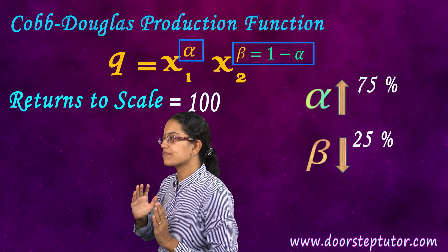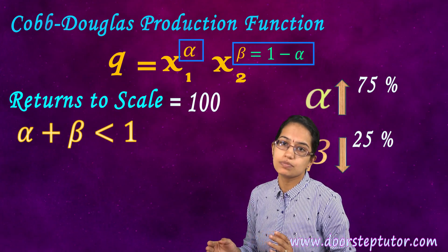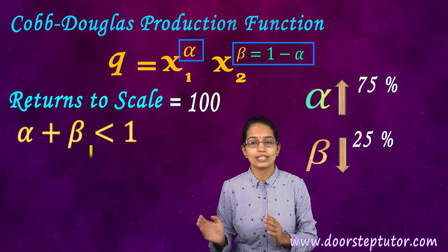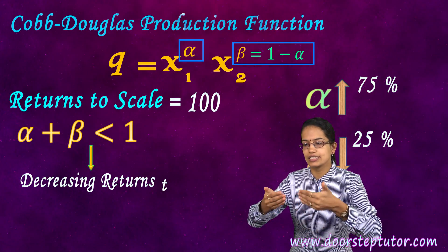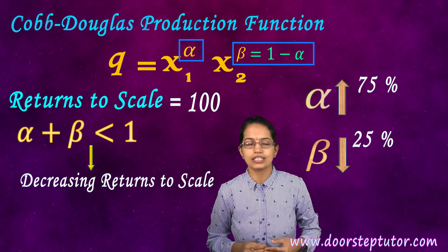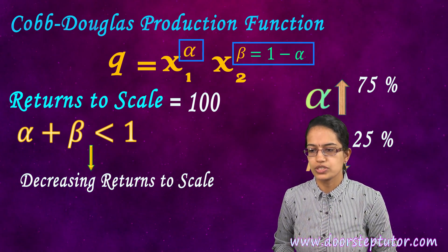Also, if there is a scenario when alpha plus beta is less than 1, then I say there is a decreasing return to scale that is demonstrated.